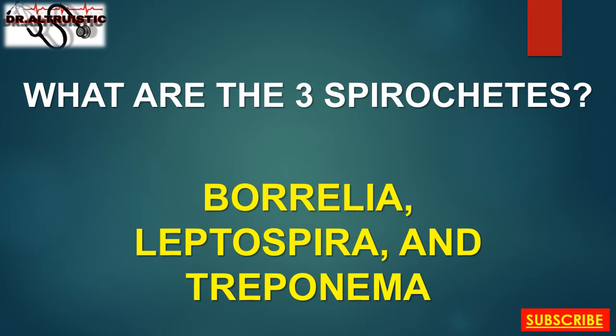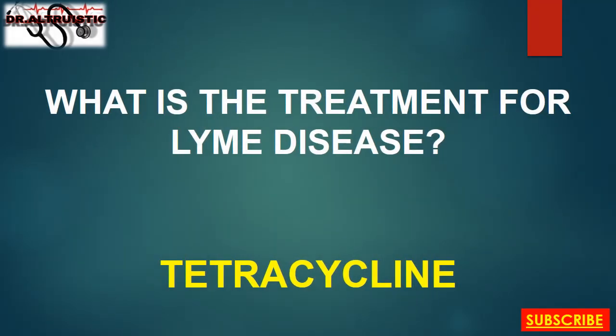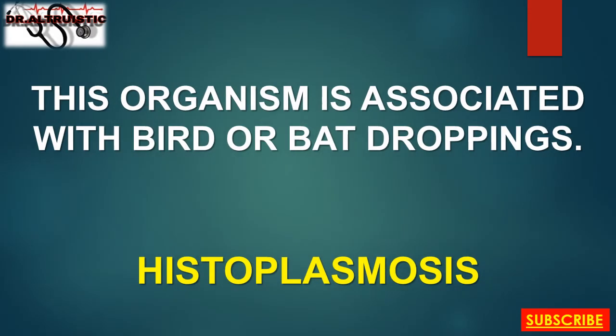What are the three spirochetes? Borrelia, Leptospira, and Treponema. What is the treatment for Lyme disease? Tetracycline. This organism is associated with bird or bat droppings: Histoplasmosis.